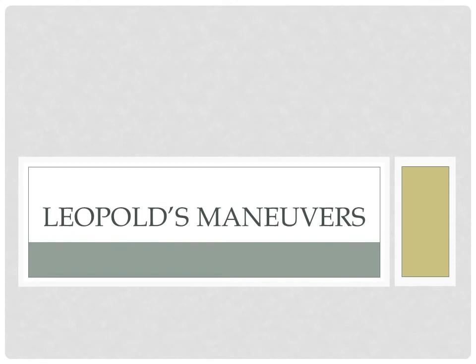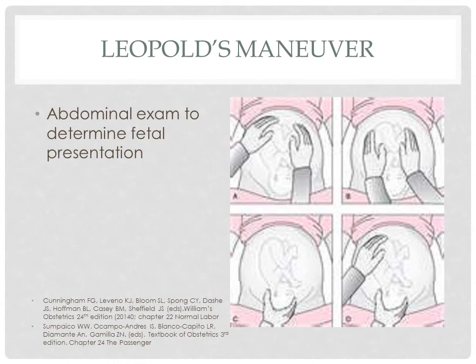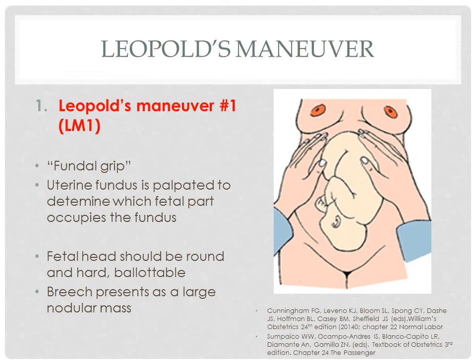For the last part of the lecture, I will teach you how to do Leopold's maneuvers — an abdominal exam to determine fetal presentation. We have four Leopold's maneuvers. LM1, also called the fundal grip, involves palpating the uterine fundus to determine which fetal part is occupying it. A round and hard palpable part is the fetal head; a large nodular mass is the fetal breech. In this picture, LM1 is breech.